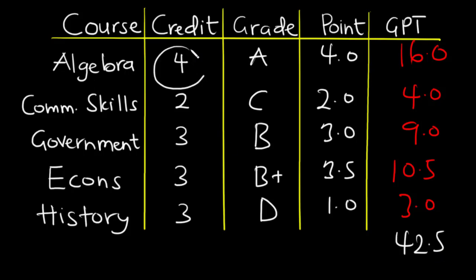Now 4 plus 2 is 6, 6 plus 3 is 9, 9 plus 3 is 12, and 12 plus 3 is 15. So this is the total credit.